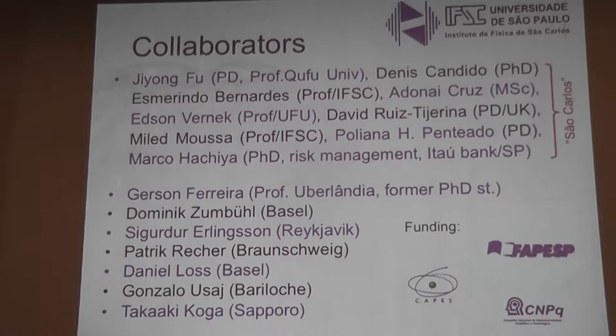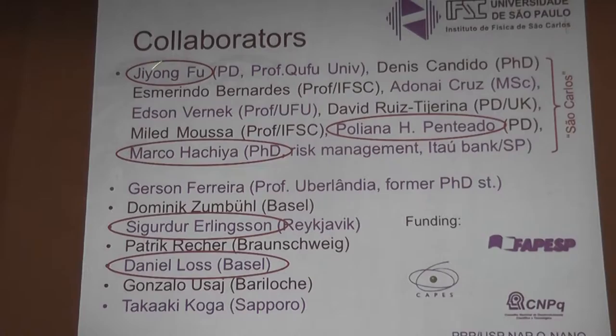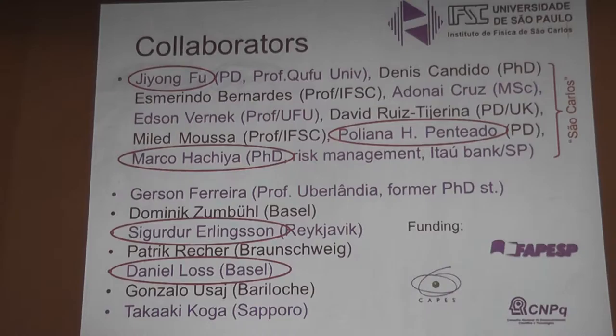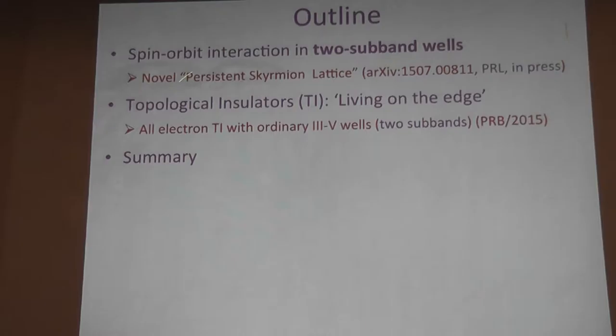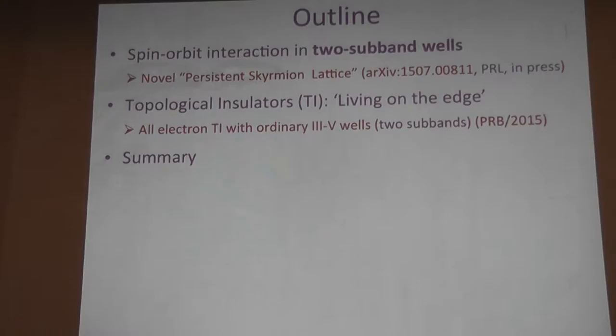Here are the Stormlight collaborators in Brazil and abroad. Today's talk will be related to the work of John Fu from Coldock, Poliana, and Marco, two of my former PhD students, and I was also involved with Sibiru Ellingson. This is a brief outline: we'll start by telling you about the spin-orbit interaction, and towards the end of the talk, I'll focus on topological insulators.